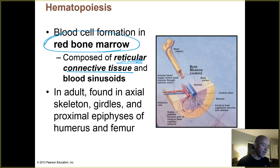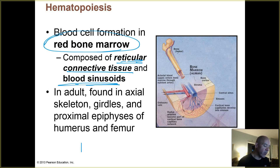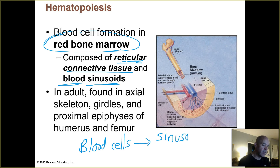So red bone marrow consists of that type of tissue, and then it contains blood sinusoids, which might be a new word for you. That's kind of like a widened, irregularly shaped blood vessel or capillary. Basically, your new blood cells get formed in this red bone marrow, and then they enter these compartments called sinusoids, which then lead to blood vessels.